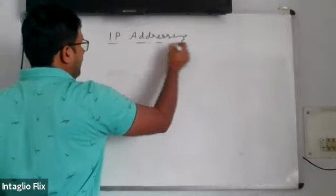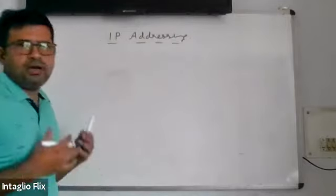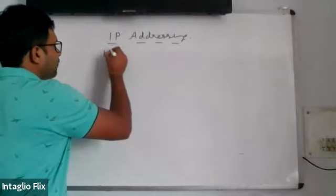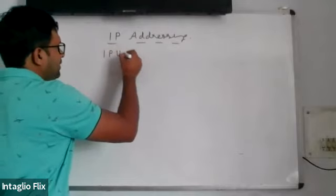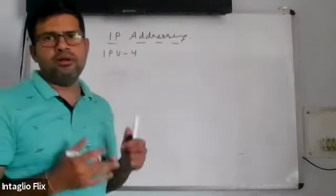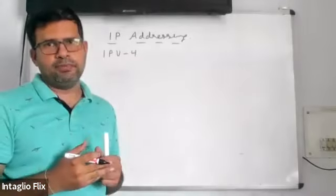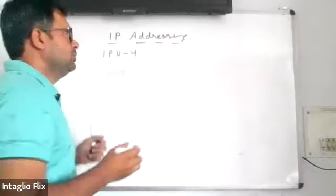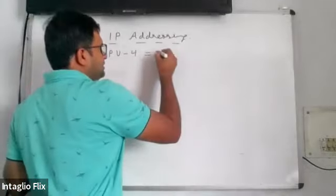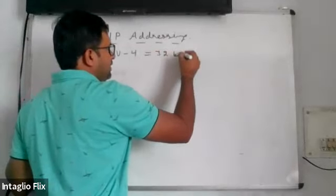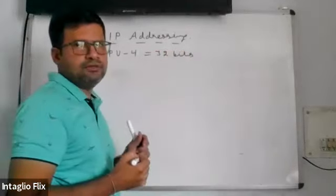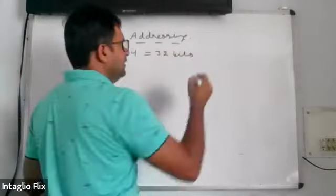The IP addressing we are talking about is known as IPv4 addresses. IPv4 is known as Internet Protocol version 4. The length of this IP address is 32 bits. In networking, everything is calculated in bits.